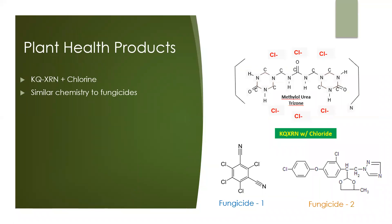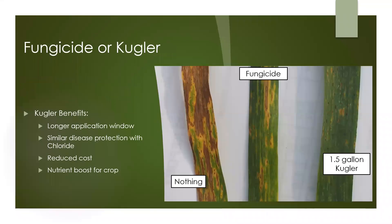Now we'll switch into what we refer to as plant health products. When we talk about the Kugler plant health products, we're talking about resisting disease. They're not registered as a fungicide, but they have the same mode of action as many brand-name fungicides. The fungicides don't kill anything, but what they do is prevent the plant from being infected with disease spores. The Kugler plant health products combine XRN with chloride, as shown in the top picture. The bottom pictures show the chemistry in two brand-name fungicides — notice they too have chloride in their structure. The Kugler plant health products have switched over a million acres in North America from fungicides for a few main reasons: one, you have a longer application window because of the stickiness and slow release of XRN; two, you get similar protection against disease pressure.